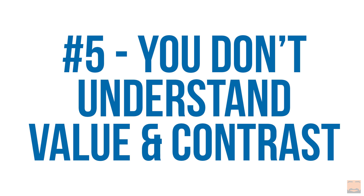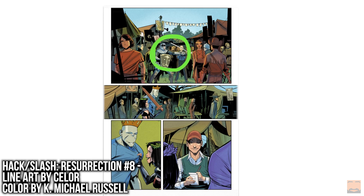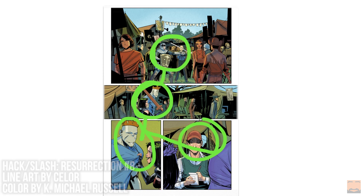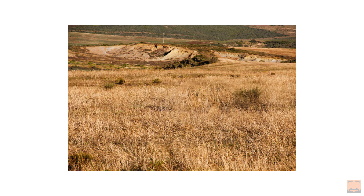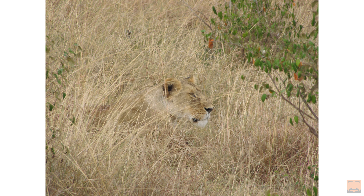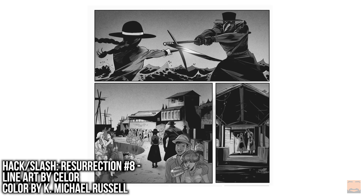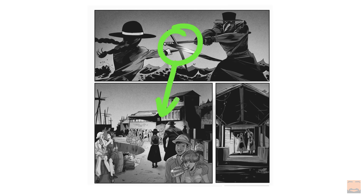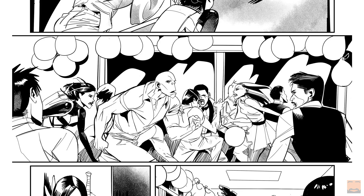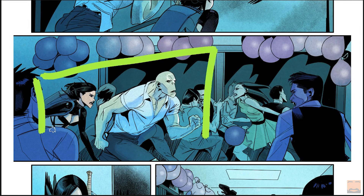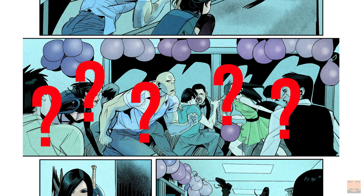Let's get started with the number five rookie colorist problem: you don't understand the importance of value and contrast. The reader's eye will tend to gravitate toward areas of higher contrast. This likely stems from the days when we were running around grasslands trying to avoid lions millions of years ago — it was really important that humans could distinguish very quickly between a patch of grass and a lion waiting to eat you. Colorists can exploit this to our advantage. If your values are clearly defined and more contrast is focused on the most important areas of the page, those panels are going to be clearer to the reader.